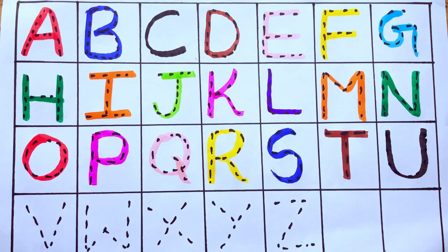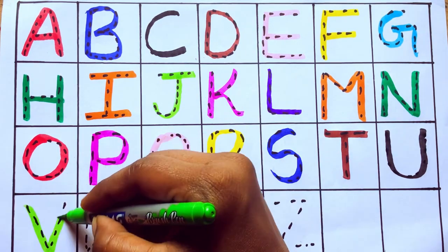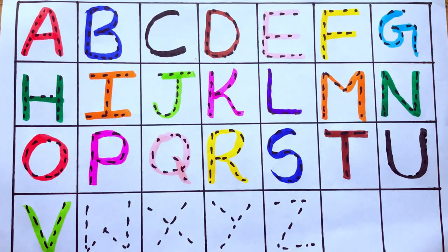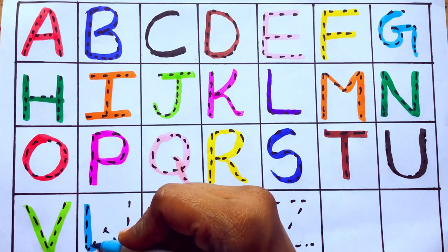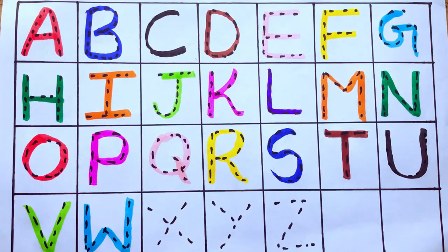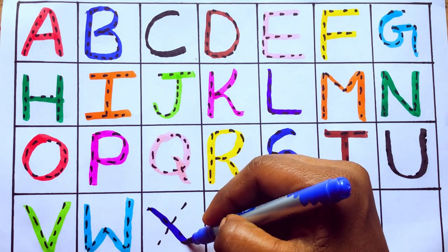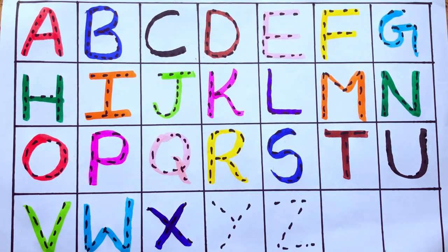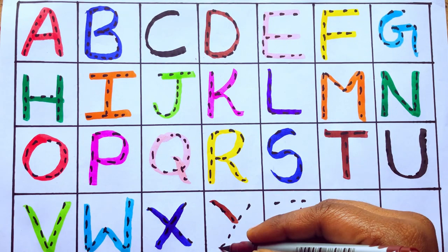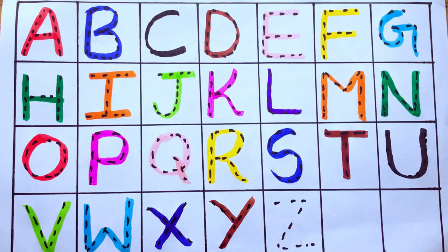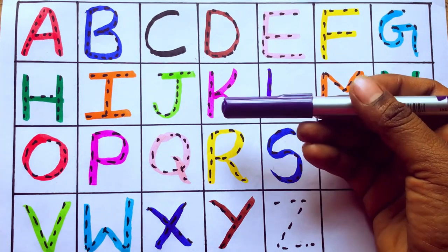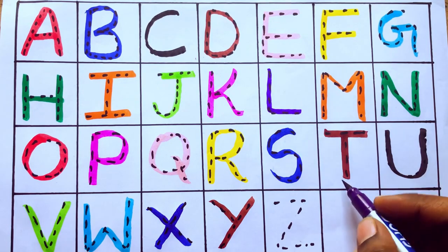Blue color U, V, W. Yellow color X, Y. Violet color Z, Z for zebra.